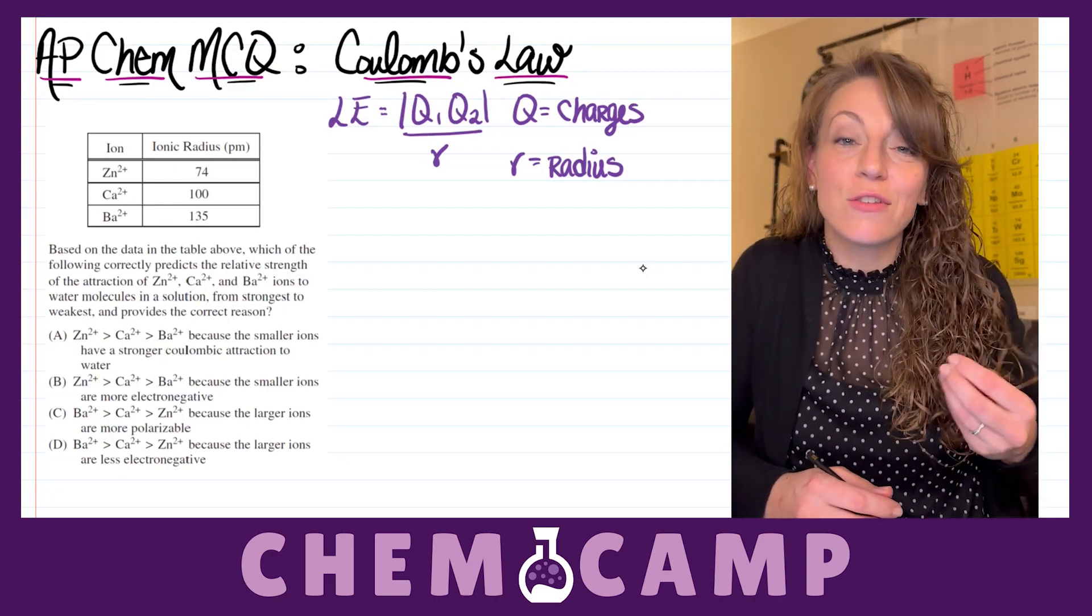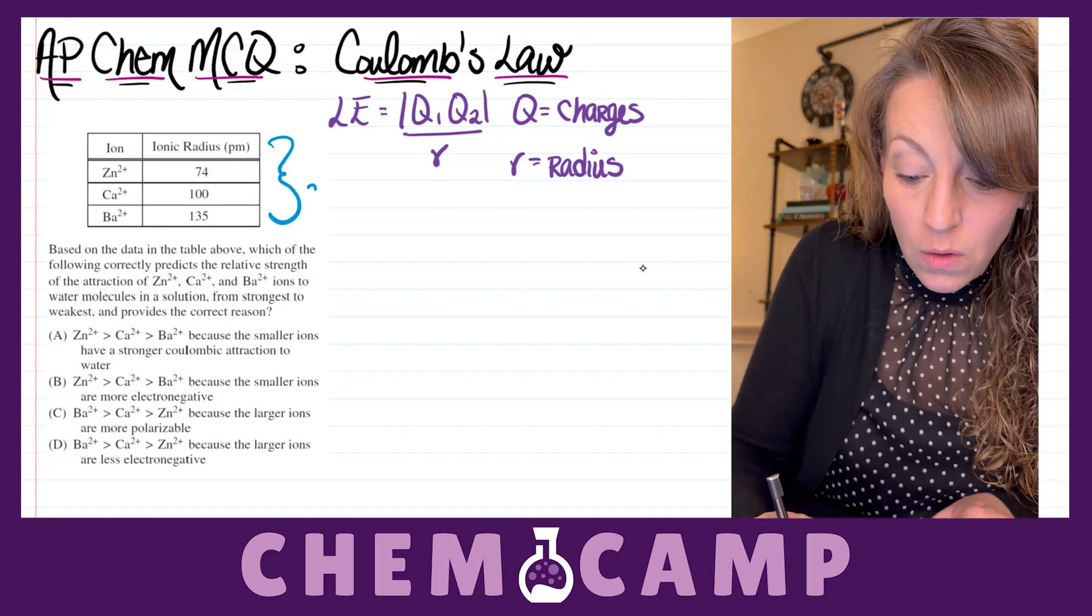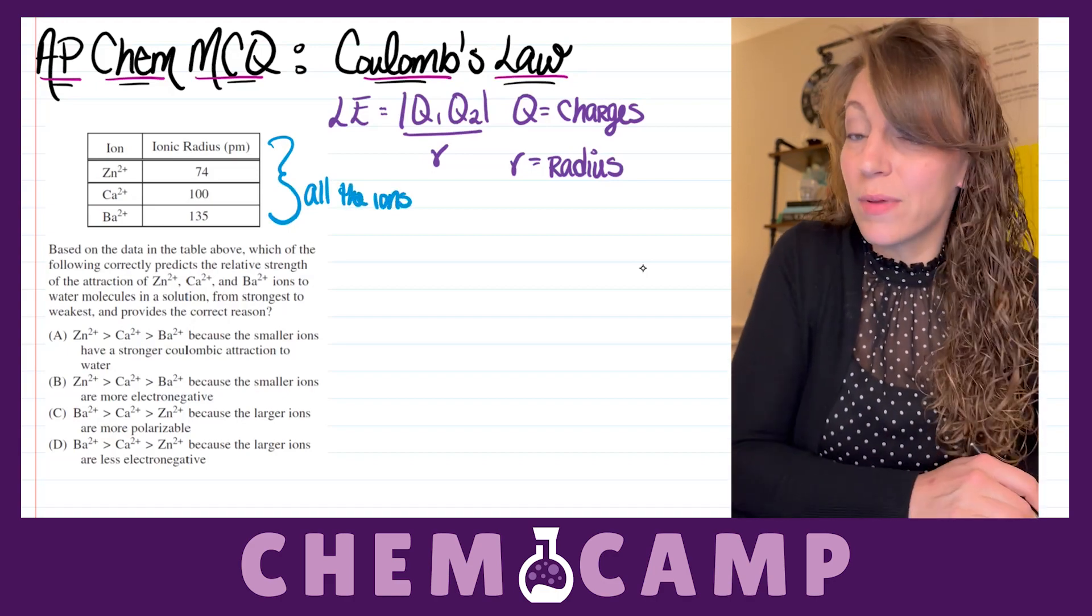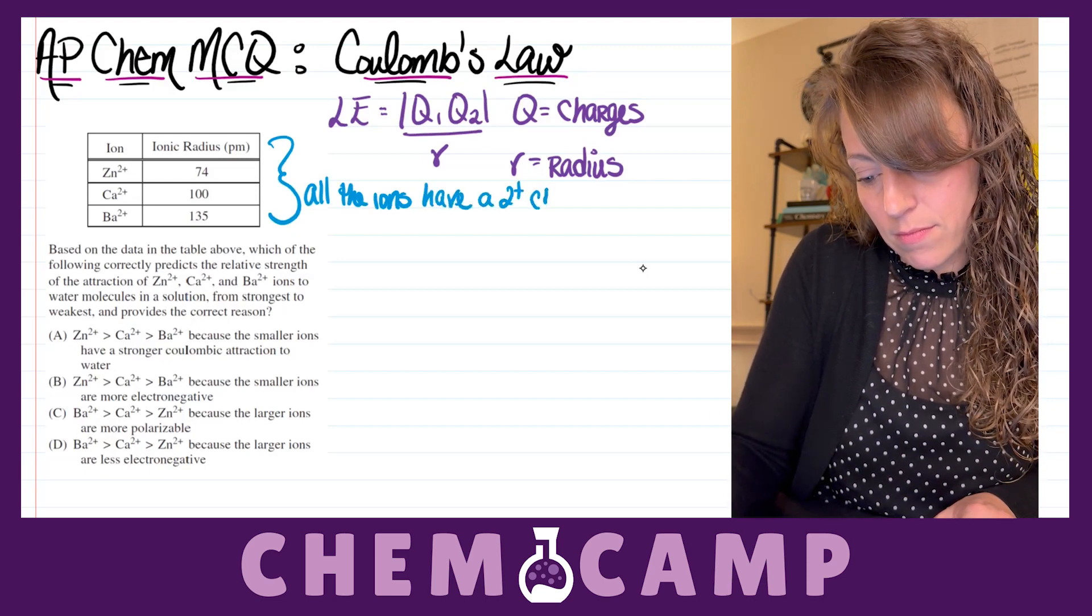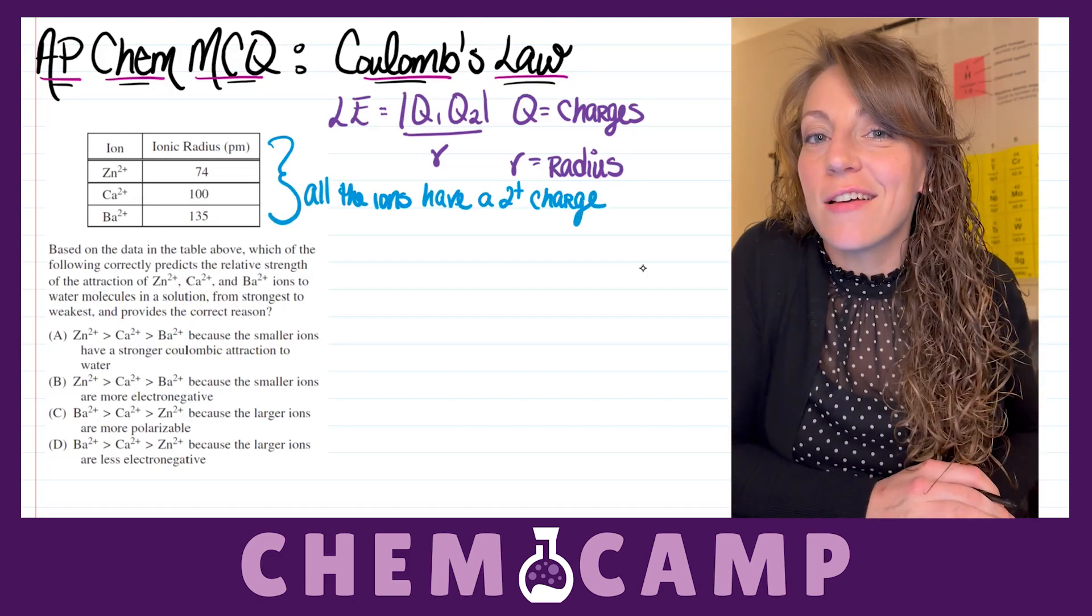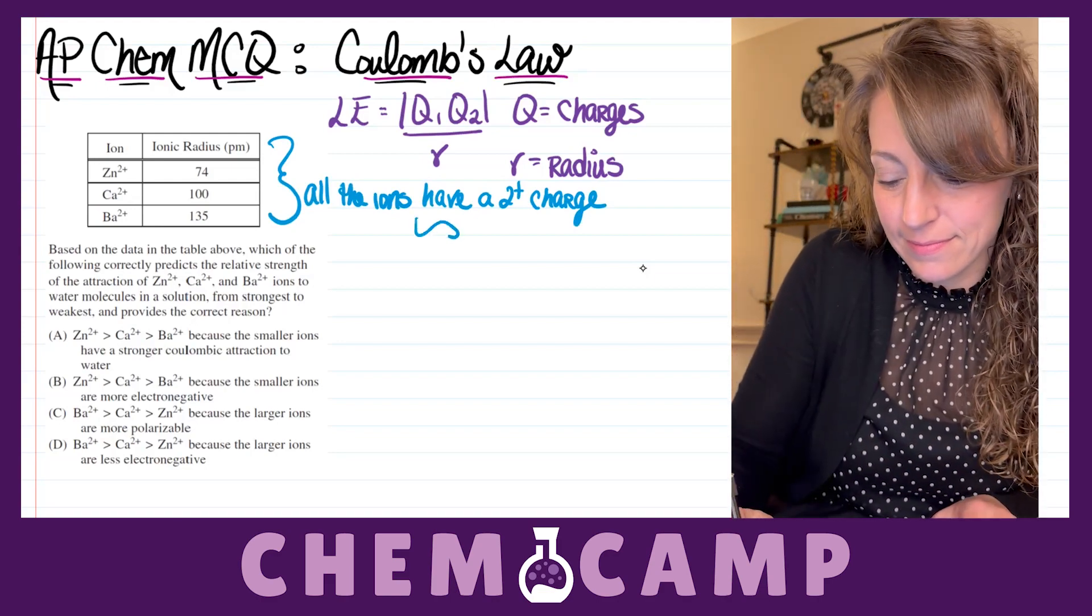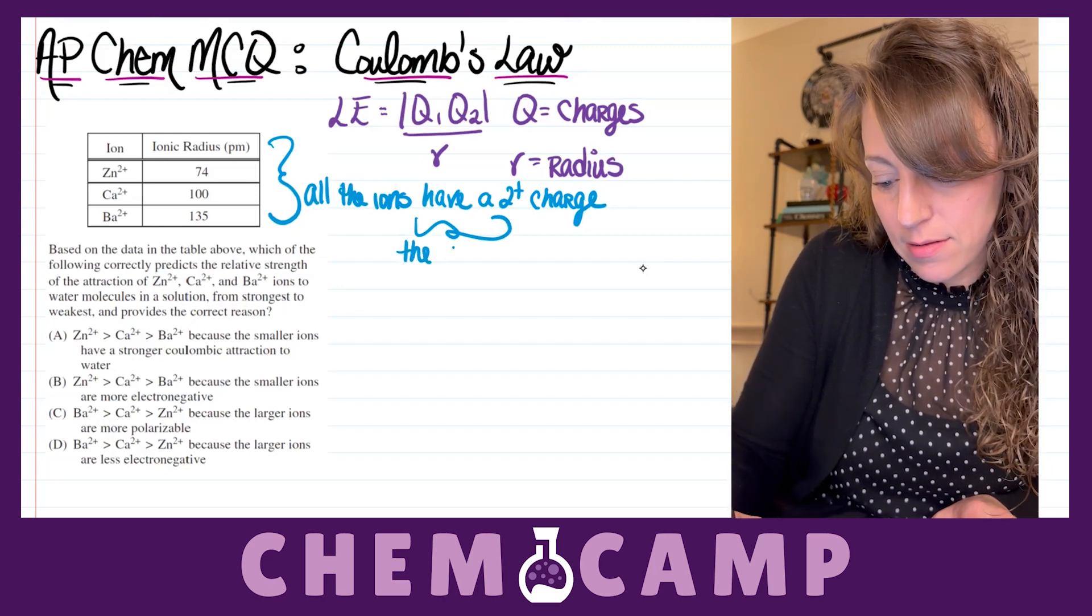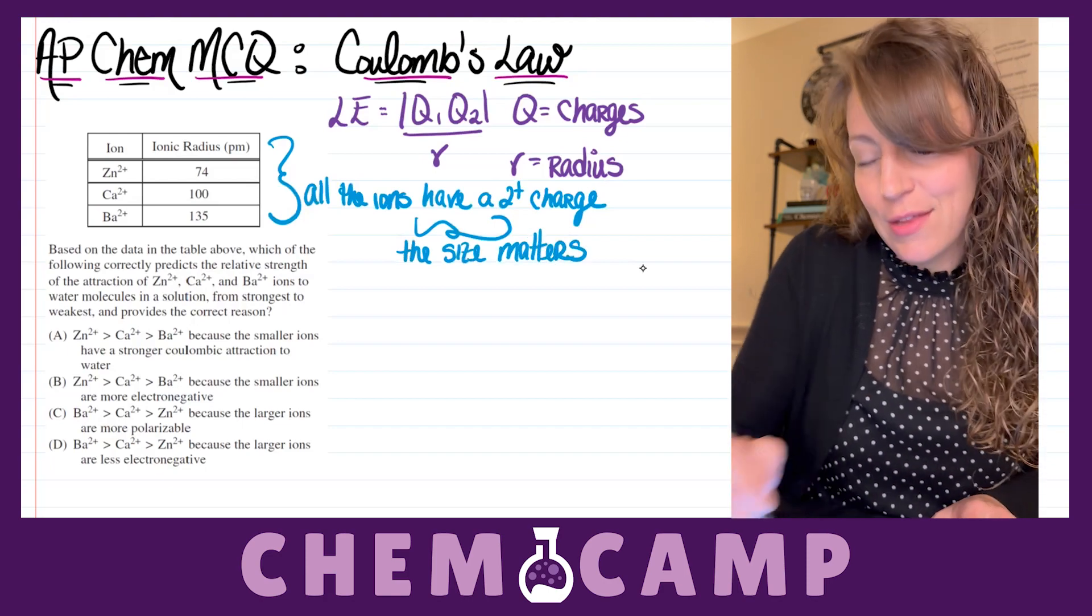So let's consider the charges of each one of our ions. In this particular case, all the ions have a 2-plus charge. So when the charges of those ions are all the same, then it comes down to the size.